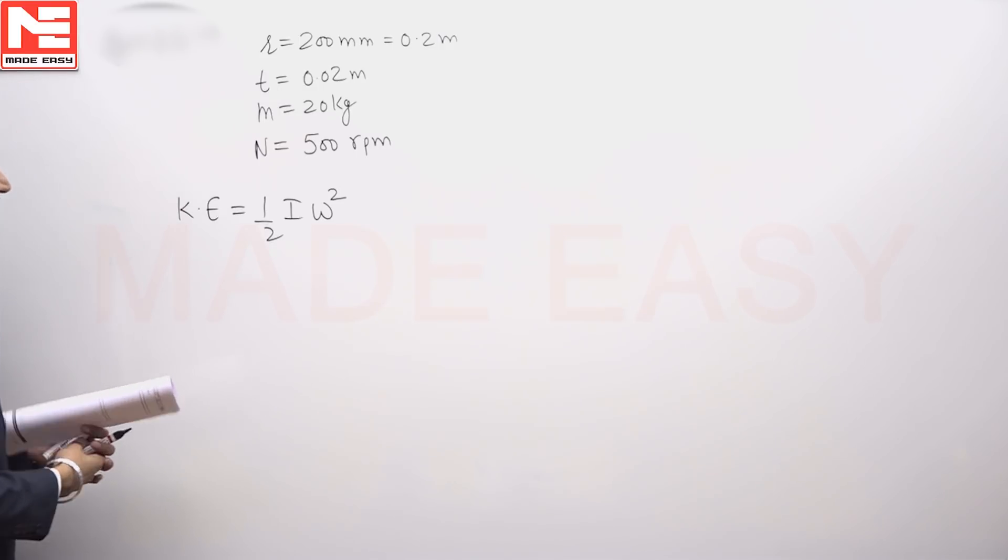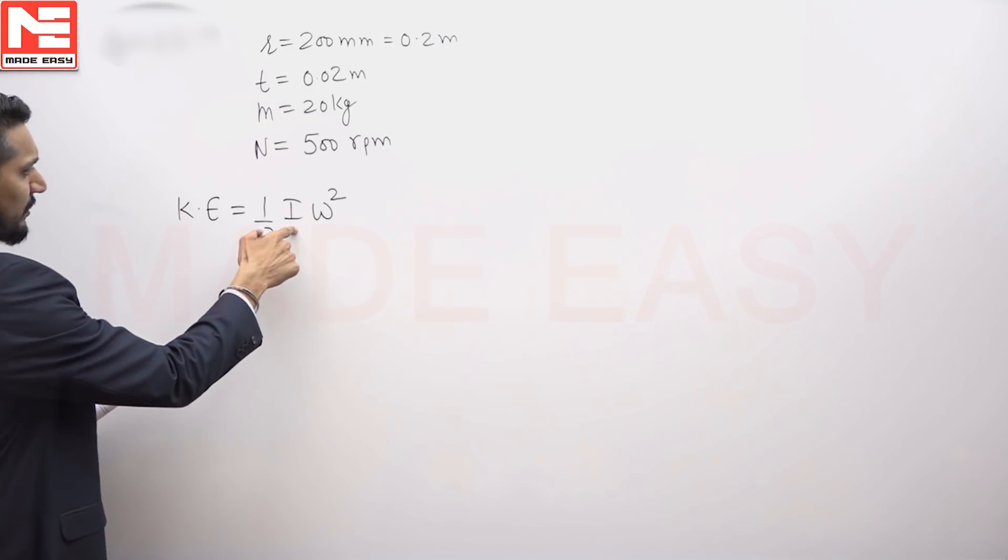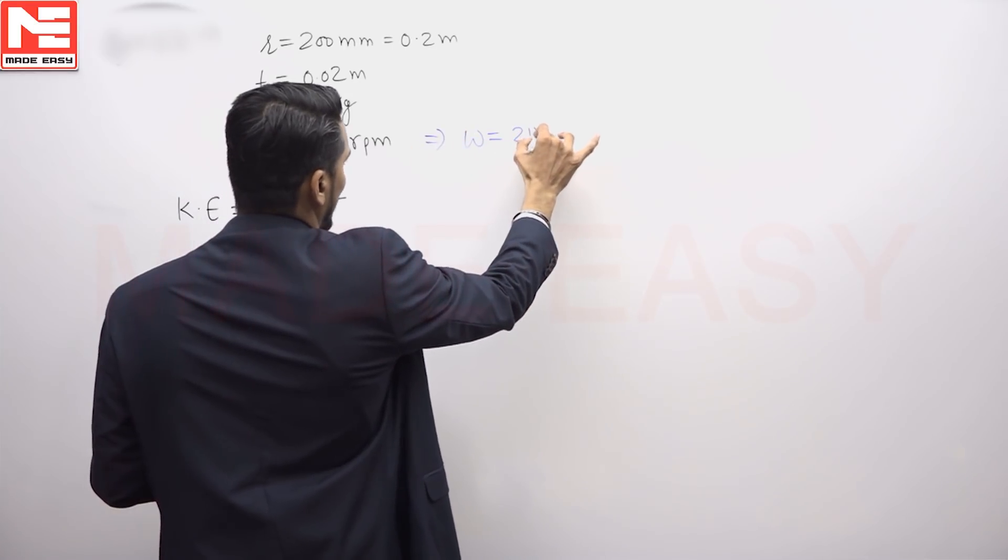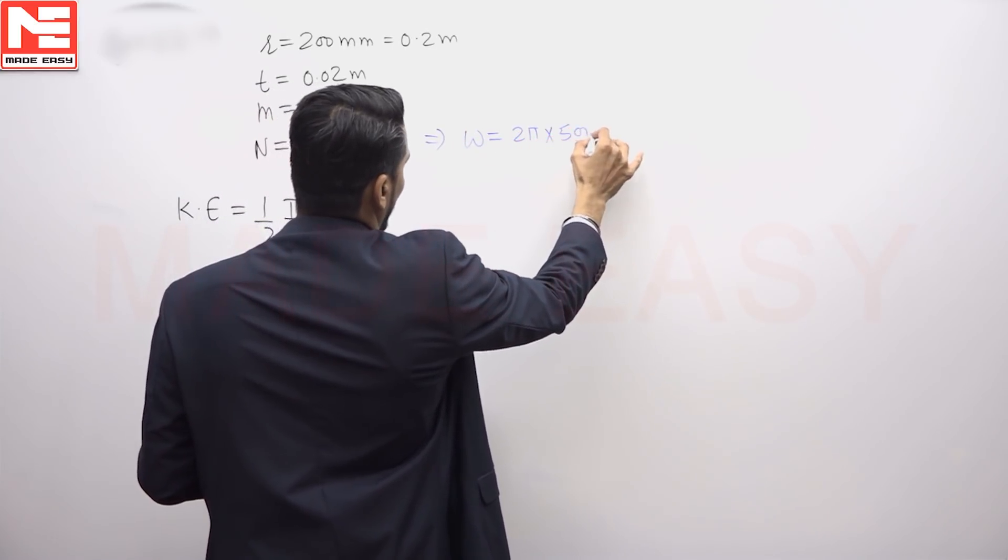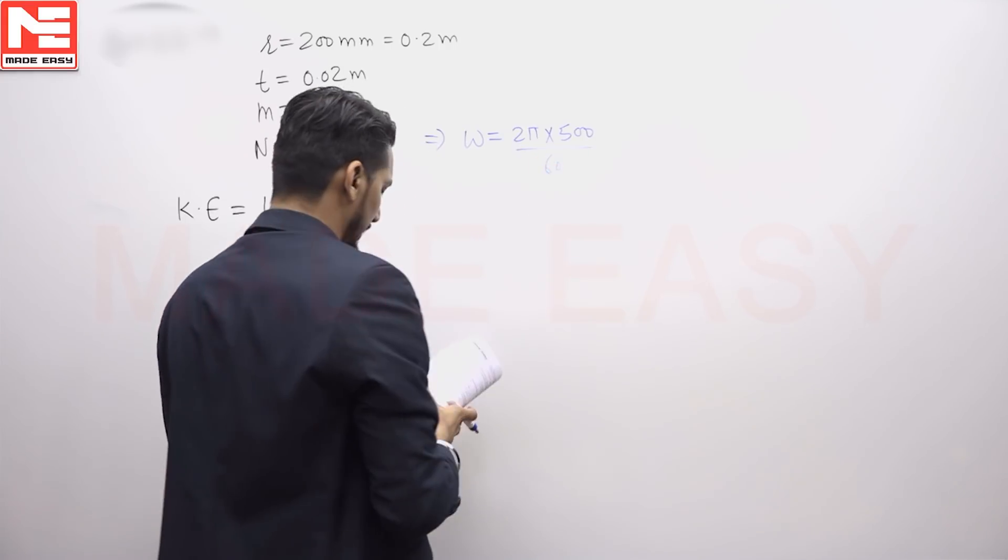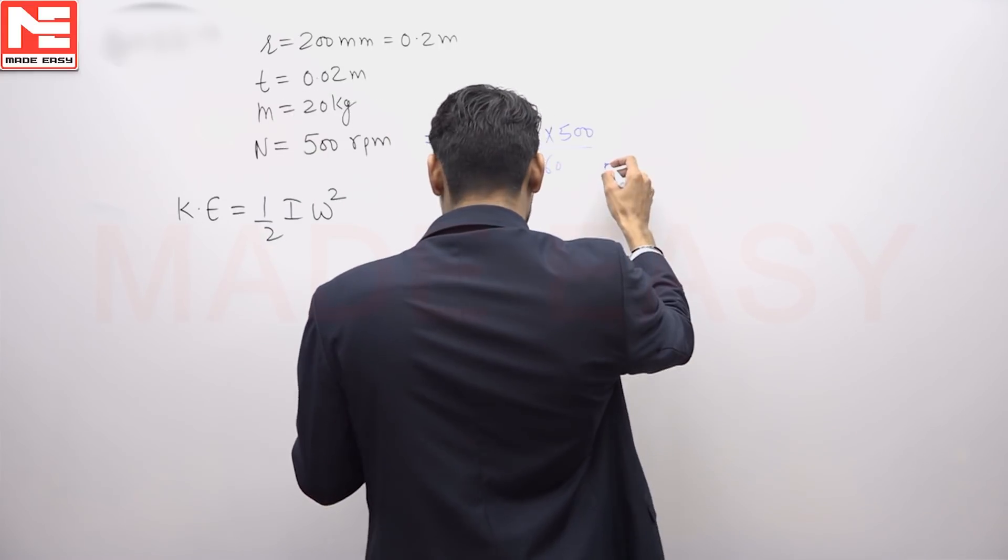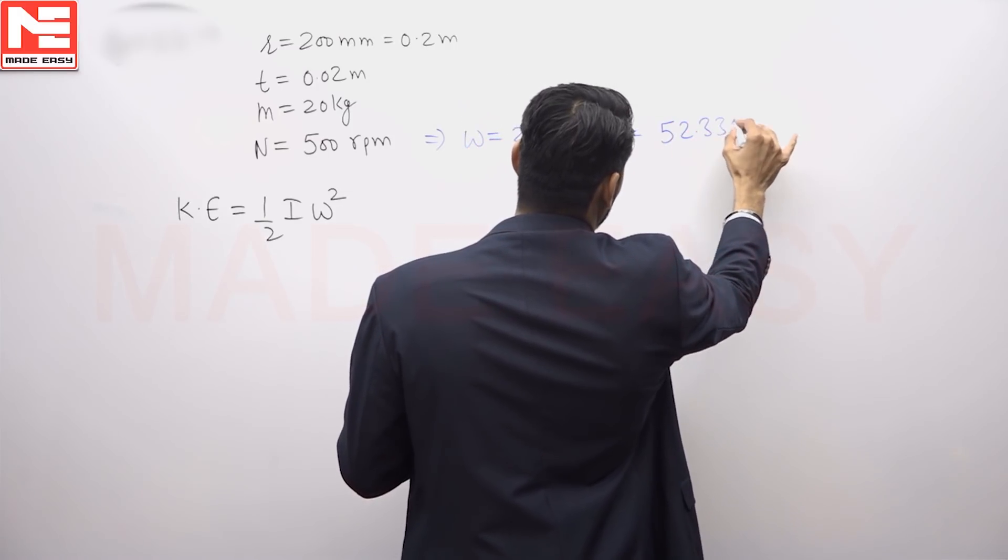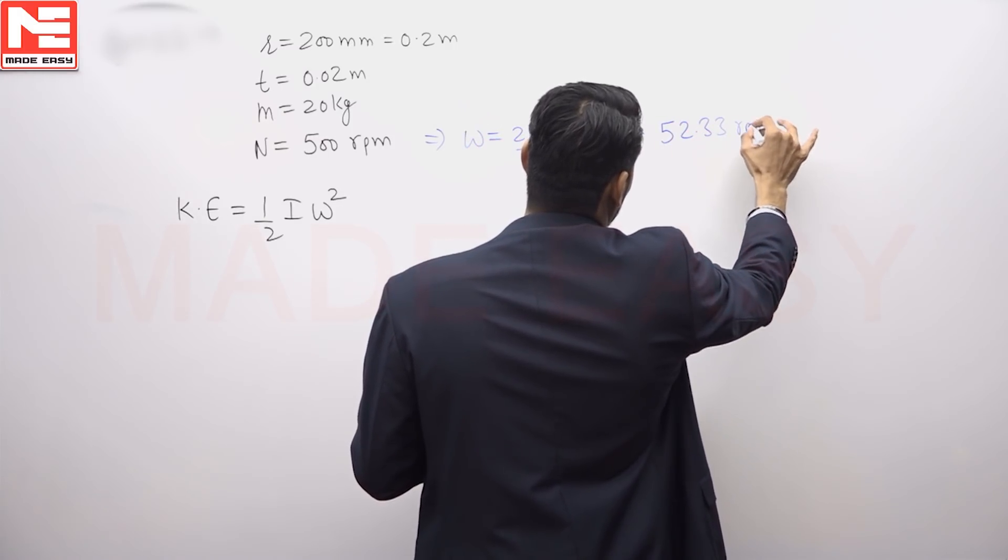Now I need to find I and omega. Omega is simply 2πn, where n is 500 by 60. So 2πn/60 comes out to 52.33 radians per second.